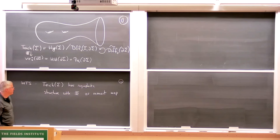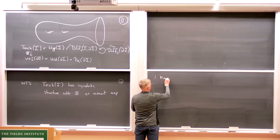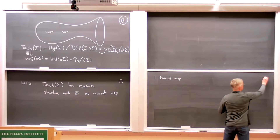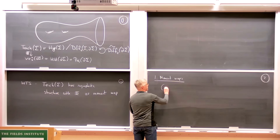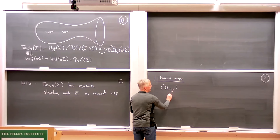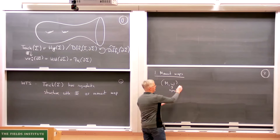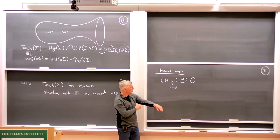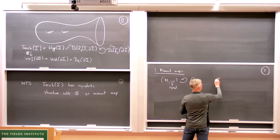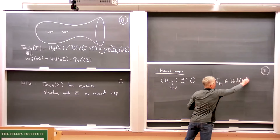Since I don't expect that people know so much symplectic geometry, let me briefly recall what it means to be a moment map. The setting is: we have a symplectic manifold where omega is a two-form which is closed and non-degenerate, and you have some group acting on it preserving the symplectic structure. This group action has generating vector fields, which I denote by psi subscript M — these are vector fields on M, the infinitesimal generators for the action.